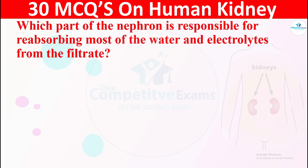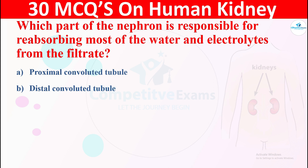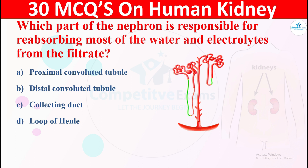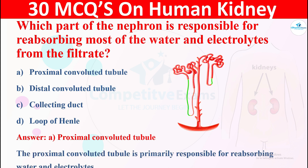Question 12: Which part of the nephron is responsible for reabsorbing most of the water and electrolytes from the filtrate? The options are: A) proximal convoluted tubule, B) distal convoluted tubule, C) collecting duct, or D) loop of Henle. The right answer is A, proximal convoluted tubule. The proximal convoluted tubule is primarily responsible for reabsorbing water and electrolytes from the filtrate.